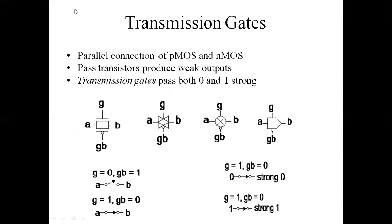Now let us discuss transmission gates. A transmission gate transmits whatever level or signal is present — it simply acts as a switch. It is formed by the parallel connection of PMOS and NMOS. The two MOSFETs, PMOS and NMOS, are connected in parallel to form the transmission gate.